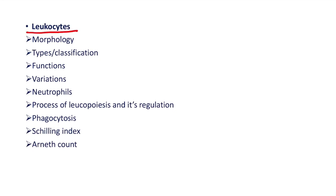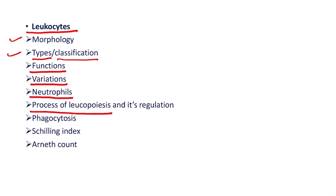Then, leukocytes. Here, describe the morphology of leukocytes, describe the classification or types of leukocytes, functions of leukocytes, variation in number of leukocytes, add a note on neutrophils, describe the process of leukopoiesis and its regulation. Then, phagocytosis, Schilling index, and add a note on the urn count — these can be the questions related to the leukocyte topic.